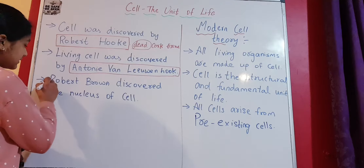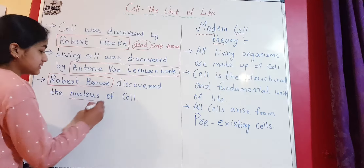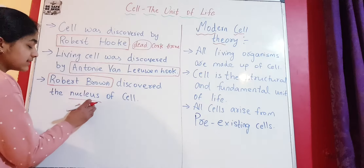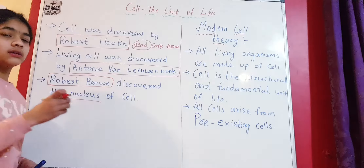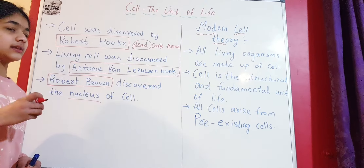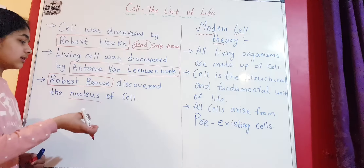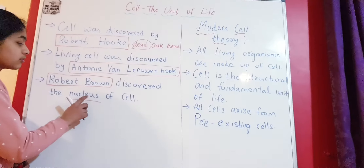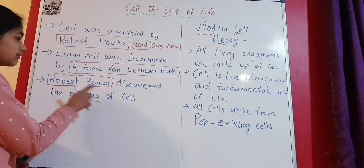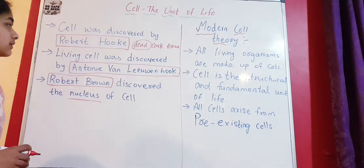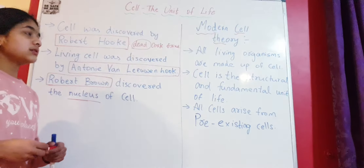Robert Brown is one more scientist — he discovered the nucleus. The nucleus acts like the brain of the cell, meaning it has all the genetic material like DNA, RNA, and proteins. It contains the nucleolus. The nucleus controls all the activities of the cell. So Robert Brown discovered the nucleus.